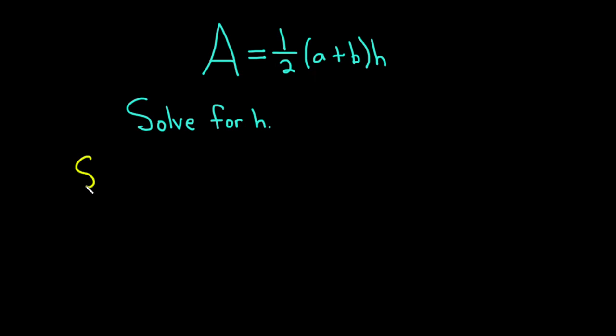Go ahead and carefully work through this solution. Let's start by writing down our equation again. So we have A equals one-half times (a + b) times h.